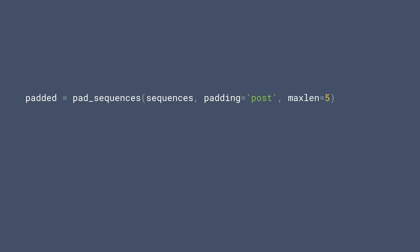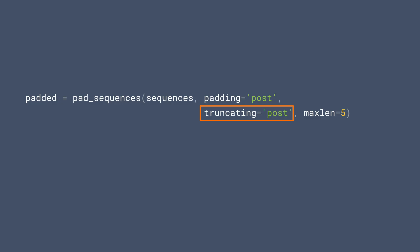Or, if you don't want the length of the padded sentences to be the same as the longest sentence, you can then specify the desired length with the max_length parameter like this. But wait — you might ask what happens if sentences are longer than the specified max length. Well, then you can specify how to truncate: either chopping off the words at the end with post truncation, or from the beginning with pre-truncation. And here's what post truncation looks like.